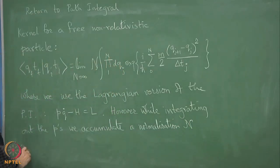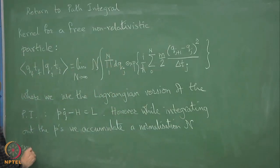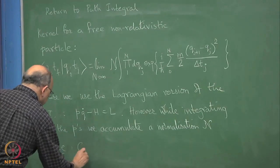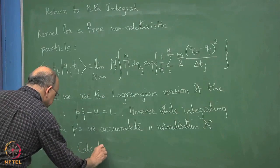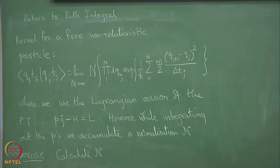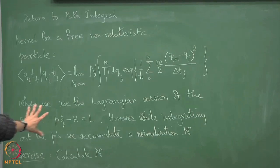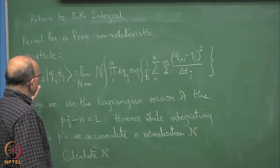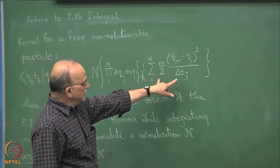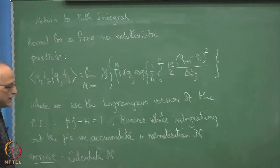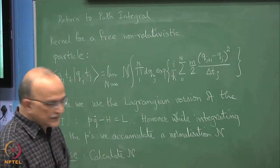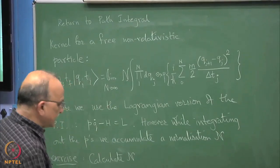So, exercise: calculate N. Ignore all the technicalities right now. What I want to demonstrate is that this thing can be calculated from an expression like this, and the key trick is to use — or rather abuse — the Gaussian integral many, many times.